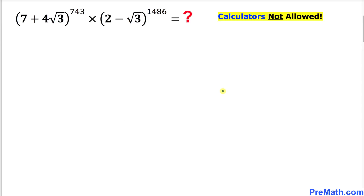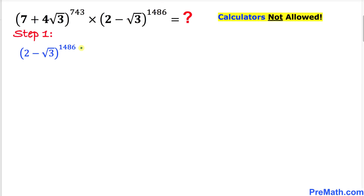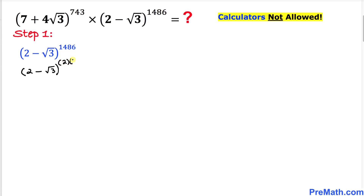Let's get started with the solution. First, let's focus on this part only: (2 - √3)^1486. The exponent 1486 can be written as 2 times 743. So we can write this as (2 - √3)^(2 × 743).